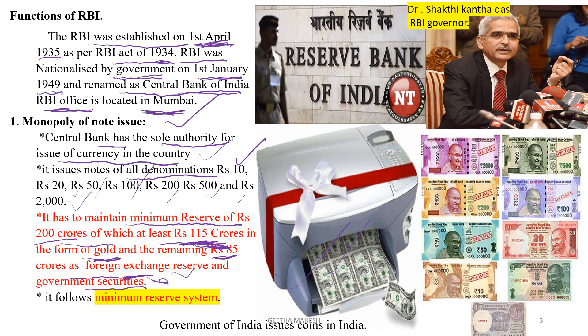So which method is RBI following? It is following the minimum reserve system. With respect to coins in India, coins are issued by the Government of India.